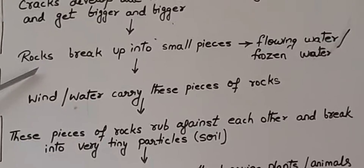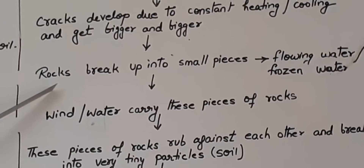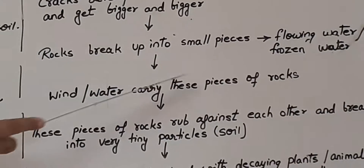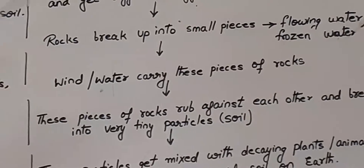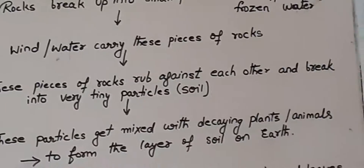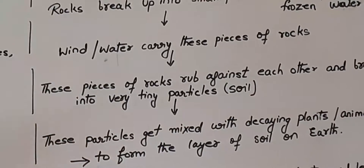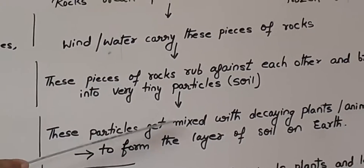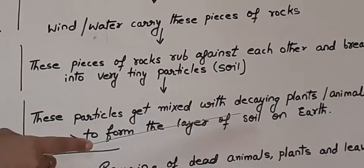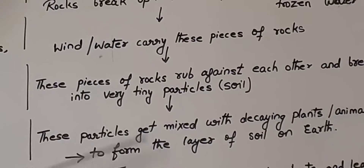Finally, they break down into small pieces due to the action of flowing water and frozen water. Then wind and water carry these small pieces of rocks to far-off places. These pieces of rocks rub against each other and break into further very tiny particles called soil. These particles get mixed with decaying plants and animals to form the layer of soil on the earth, and in this way a thin layer of soil is formed.